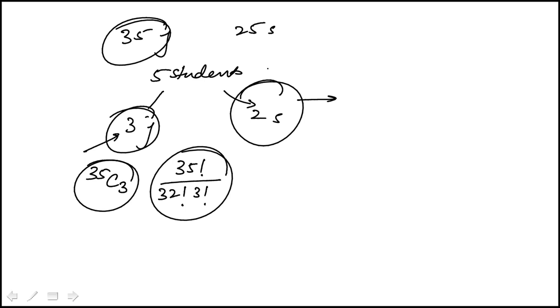We can do the same thing for the seniors. We have to select two without consideration of the order, and that's 25 factorial over 23 factorial times 2 factorial.